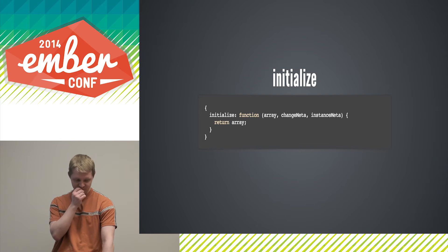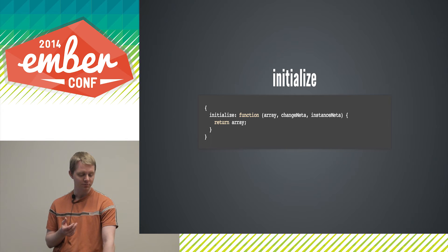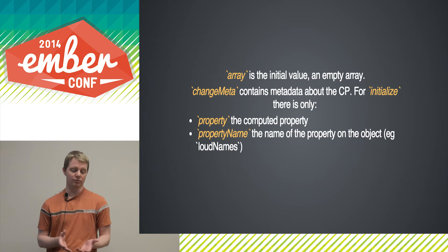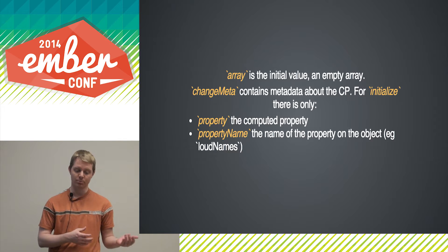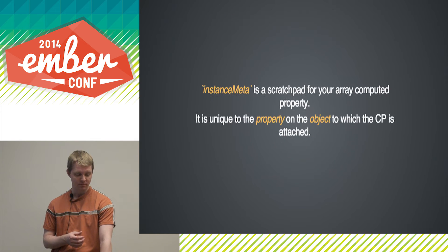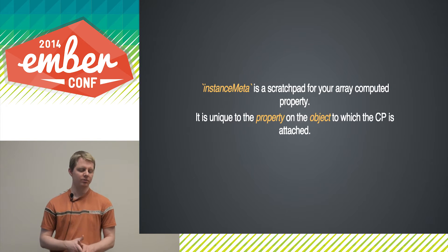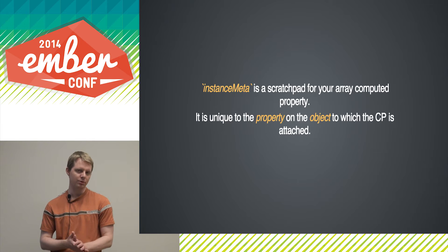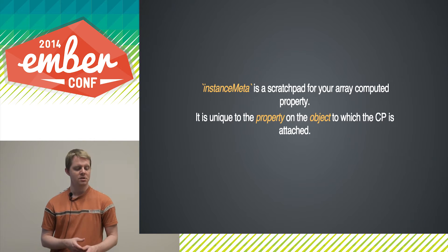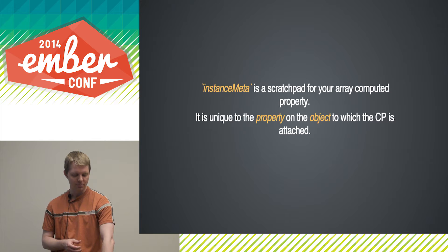Here's the signature for initialize. You have the initial value of the array, some meta information about a change, and meta information for the instance. The array is just an empty array. changeMeta for initialize has a reference to the computed property and the name of the property on the object — in the previous example, that would be loudNames. instanceMeta is not used internally at all; it's just a scratchpad for side calculations you need to maintain your array computed. For instance, if you're implementing uniqueness, you'd want to keep track of counts of individual objects so you know when the last one has been removed.